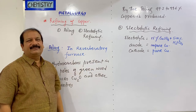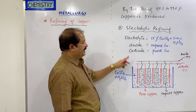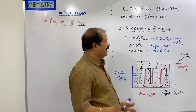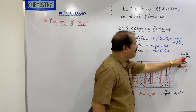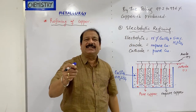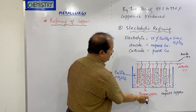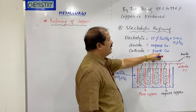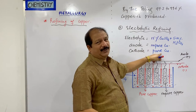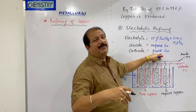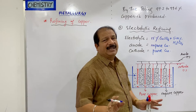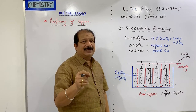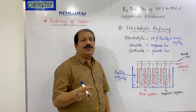Now we will see this diagram. Here we have taken the electrolyte. The anode is the impure copper — this is a thick plate of impure copper made into the anode. You know metals are always deposited at the cathode, so pure metal deposits at the cathode, and the anode dissolves.